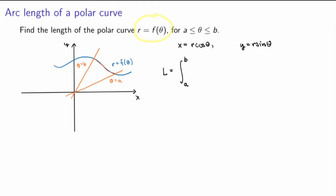So the arc length is the integral from a to b — the different values of the parameter theta — of the square root of (dx/dθ)² plus (dy/dθ)², with respect to theta. It turns out we can go a little further because things simplify nicely when we use these expressions for x and y. So let's calculate dx/dθ and dy/dθ.